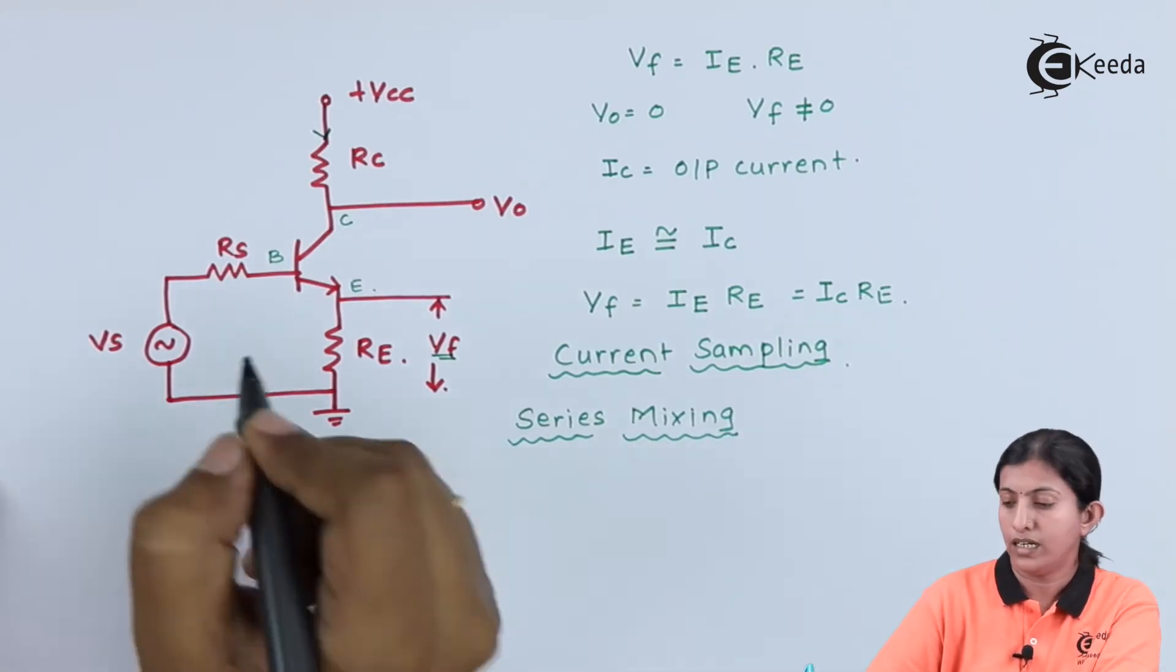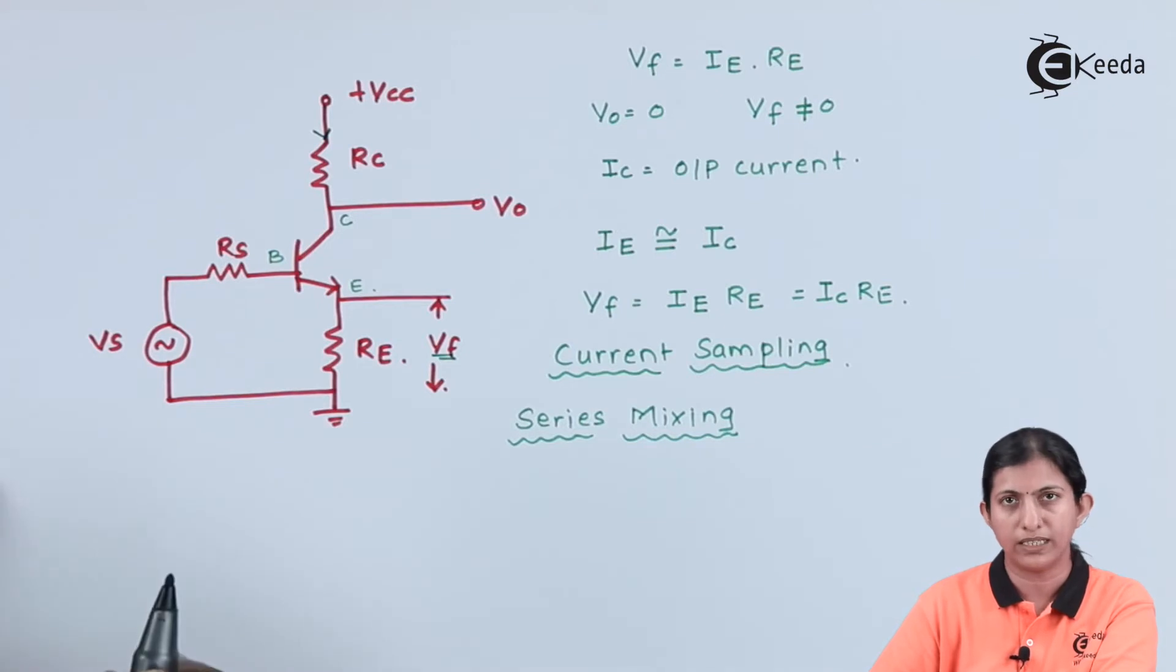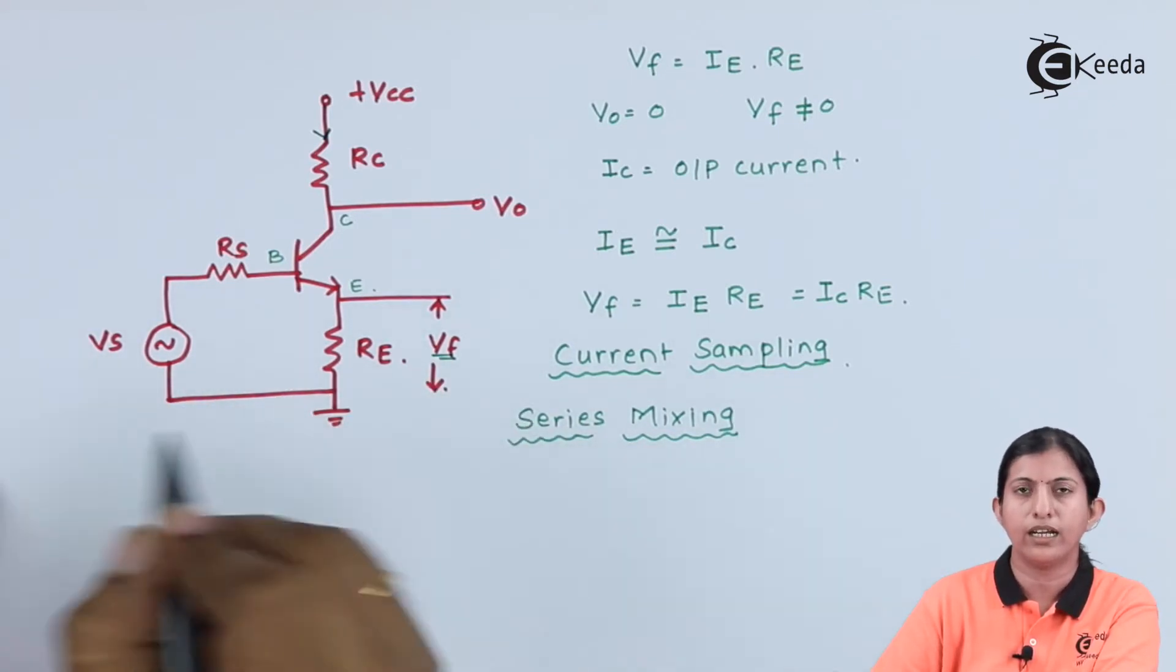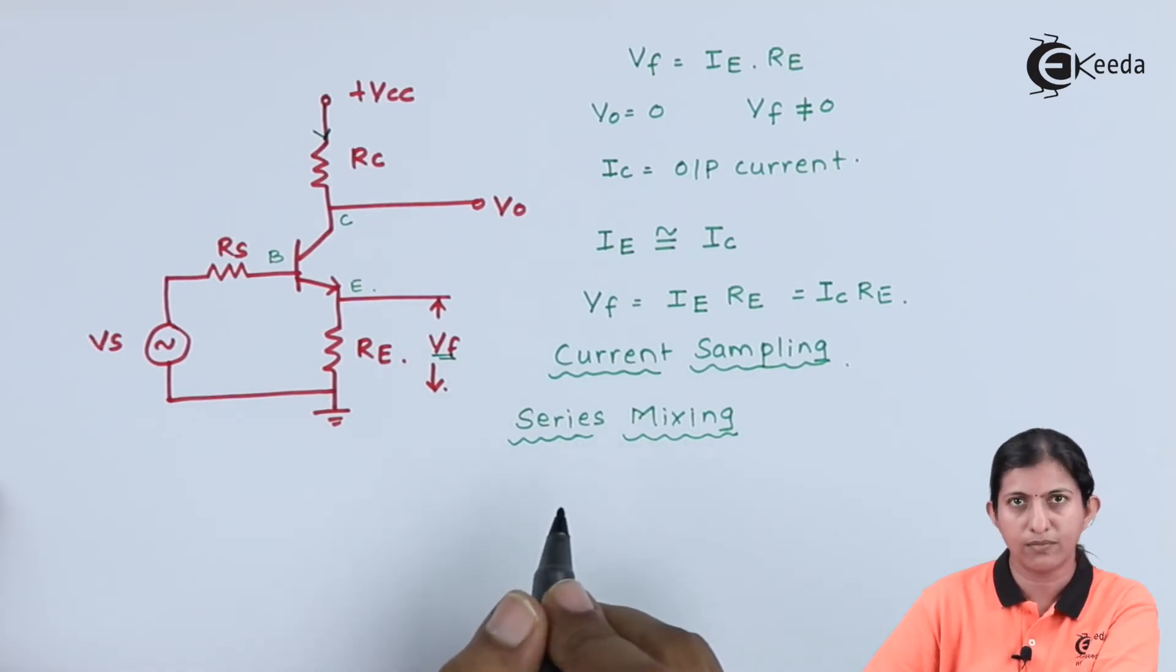As current does not split at the input side, this is not shunt mixing. Vf and Vs are connected in series opposition. Hence, the mixing is series mixing.